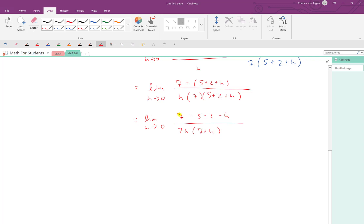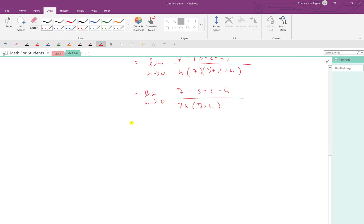And notice that we cancel that out through addition with the negative 5 and the negative 2. So I'm left with the limit as h approaches 0 of just negative h all over 7h times 7 plus h. And now I can go ahead and cancel these two factors of h, the one in the numerator, the one in the denominator.